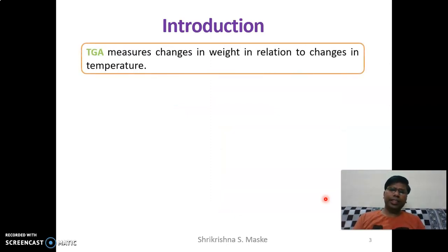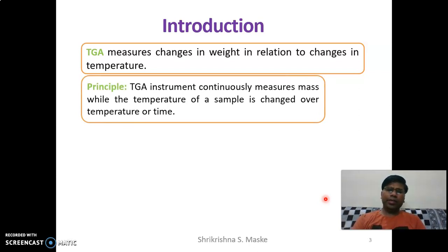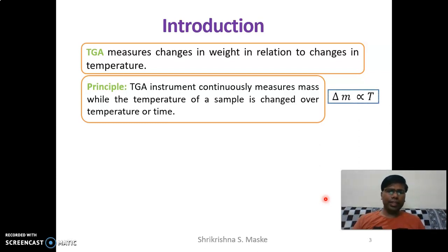TGA measures changes in weight in relation to changes in temperature. We give heat to our sample and, after increasing the programmed temperature, we measure the changes that occur in the weight. In 99% of cases, we study that the weight of the sample goes on decreasing. The instrument continuously measures mass while the temperature of the sample is changed over temperature or time — that is, delta M as a function of temperature.